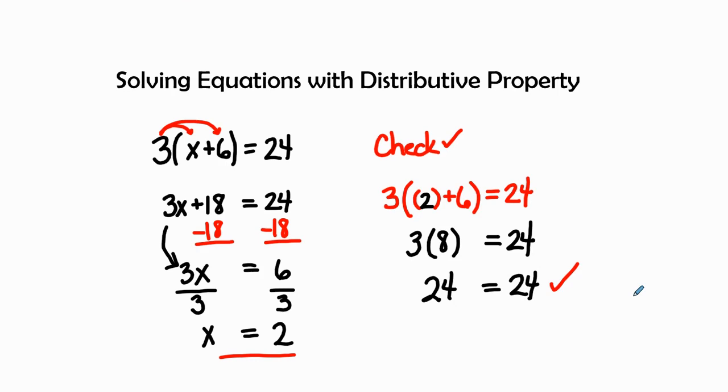So once again, remember that we need to distribute, get rid of our parentheses. Next we're going to isolate our variable to get our variable by itself by finding the inverse operation of those numbers that are attached to that variable. And then as always, we want to check our work at the end to verify that we have the correct answer.